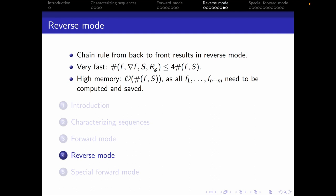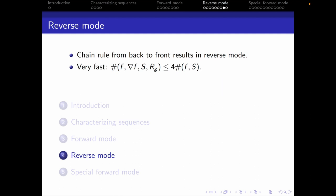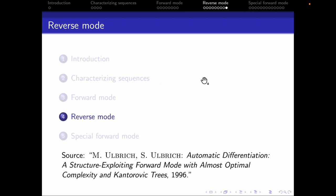In the next video we'll talk about special forward mode, which is a potential way of solving this memory problem using an improved version of forward mode to get a bit faster. The source I used for this video, as for the others, is the paper by Michel Ulbricht and Stefan Ulbricht: 'Automatic Differentiation: a structure exploiting forward mode with almost optimal complexity and Katarovic trees,' published in 1996. Thank you for watching, and perhaps see you in the next video.